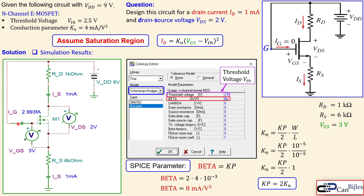We have verified that the calculations for RS, RD, and VGS are correct and seen how to insert parameters into the SPICE model. The circuit has been successfully designed as required. In the next video we will discuss the design of a P-channel enhancement MOSFET circuit, so stay tuned and take care.